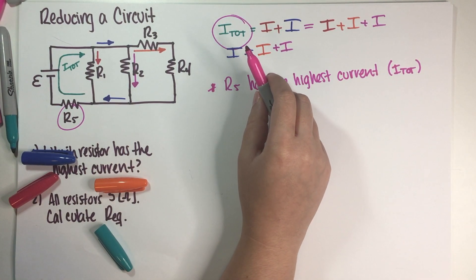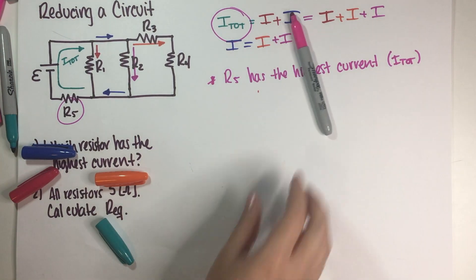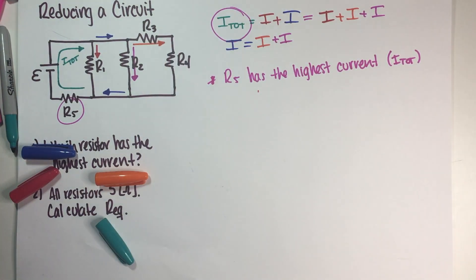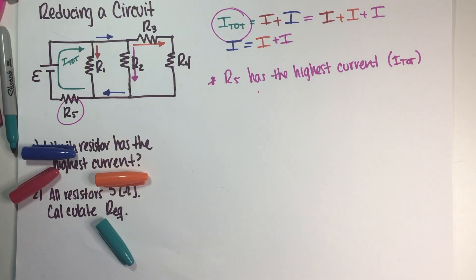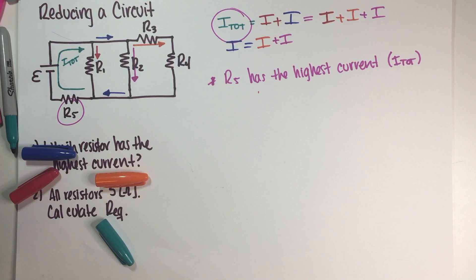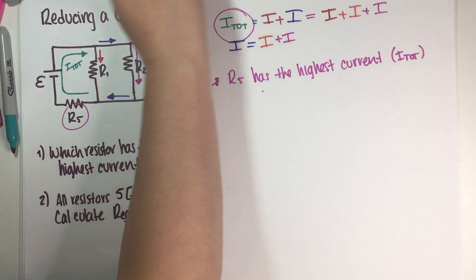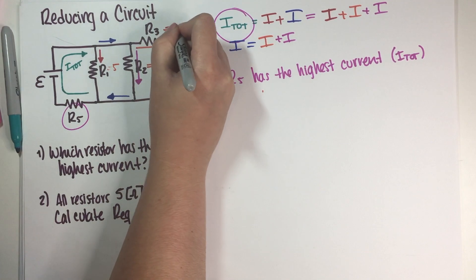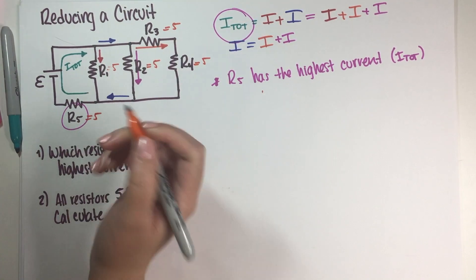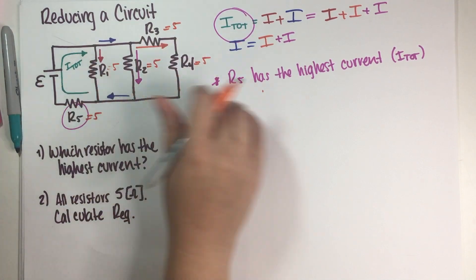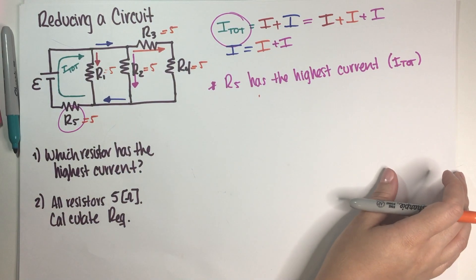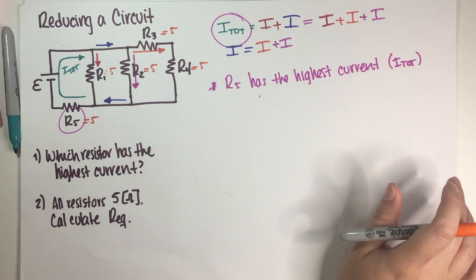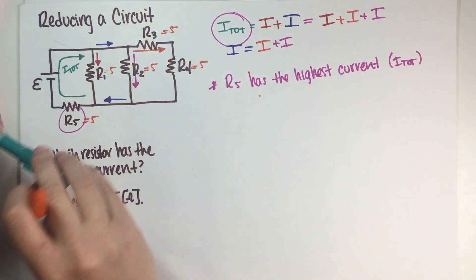So now our second question is: each resistor has a resistance of 5 ohms, calculate the equivalent resistance. So basically now every single resistance is equal to 5. And now we need to find the equivalent resistance of all of this put together. So we basically need to do a step-by-step in which we reduce the circuit element by element.